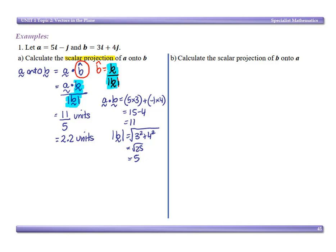So we've got b onto a, so my vector b dot product with my unit vector of a. So in terms of the formula, the dot product of b and a over the magnitude of a.